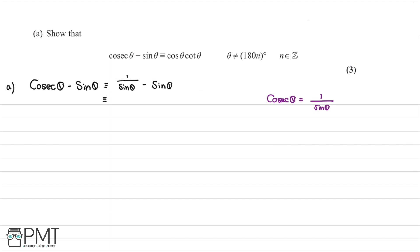The next step is to multiply this out and combine into a single fraction. The numerator is going to be one multiplied by one, which is one, minus sine theta multiplied by sine theta, which is sine squared theta. For the denominator, we have sine theta multiplied by one, which equals sine theta.